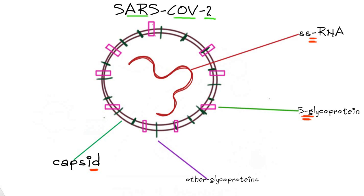Let's first make it clear that COVID-19 is actually the disease, and the virus which causes COVID-19 belongs to a family of viruses called coronaviruses. The name of this virus is SARS-CoV-2.